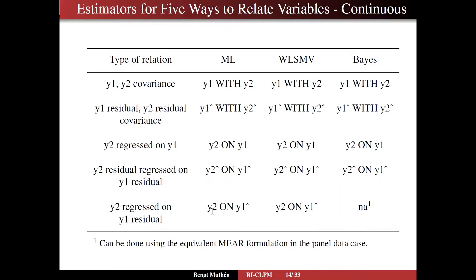And however, for the moving average situation, the y2 no hat on y1 hat, we only have that available for ML and WSMV, not yet for Bayes, although it can be done using the equivalent measurement error formulation in the panel data case, although that can be a little harder to work with in terms of convergence for certain cases.